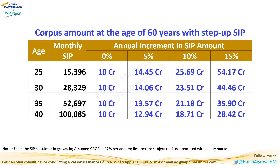And this is the magic — your income will grow with your age. So if you can proportionately increase your SIP amount every year, the corpus you can accumulate in the same number of years can be significantly higher. Just a 10% annual hike in SIP amount can help you accumulate more than double the corpus.